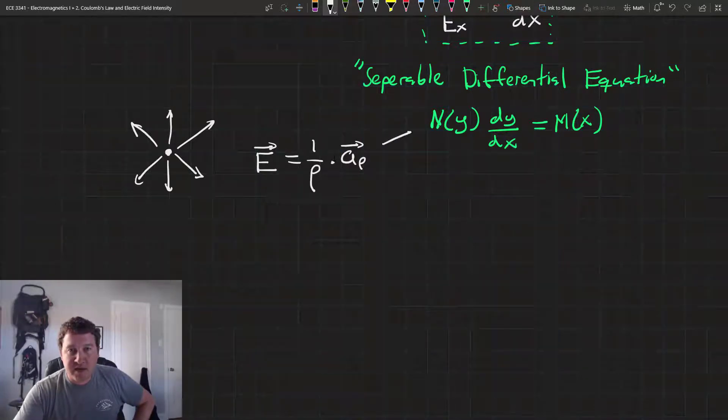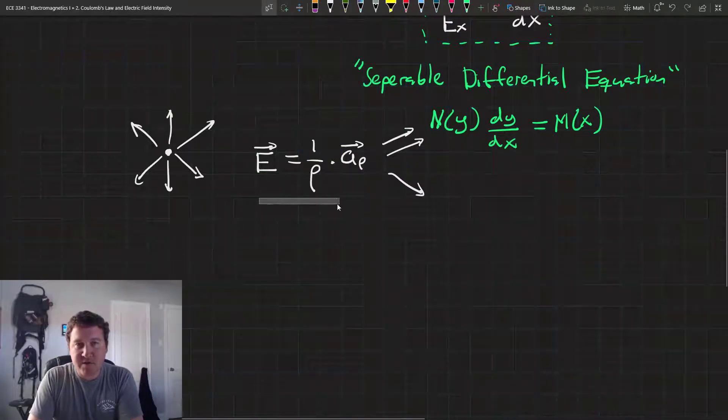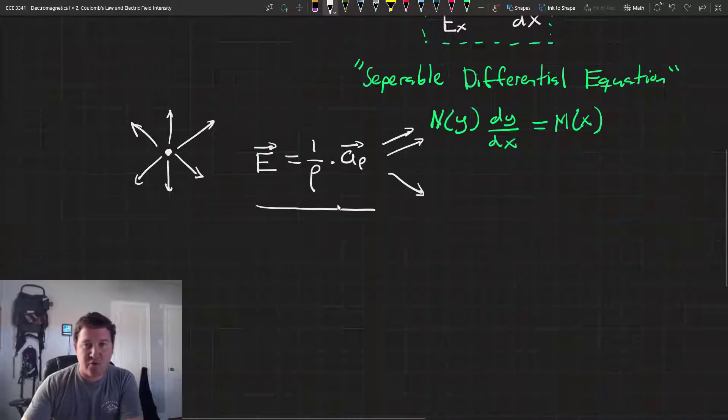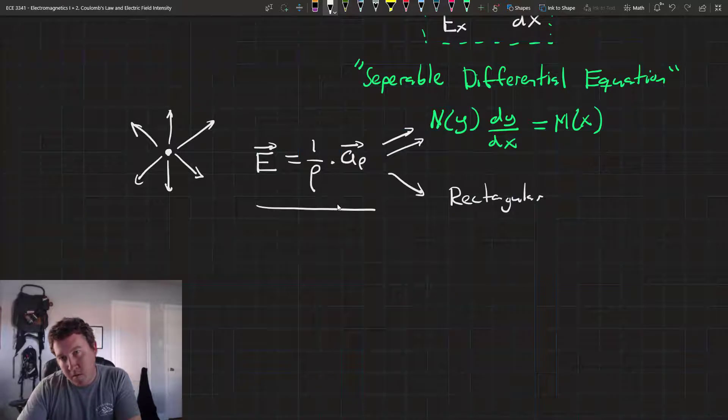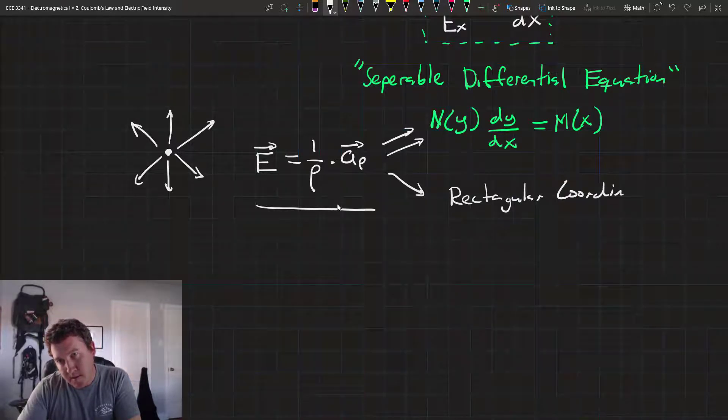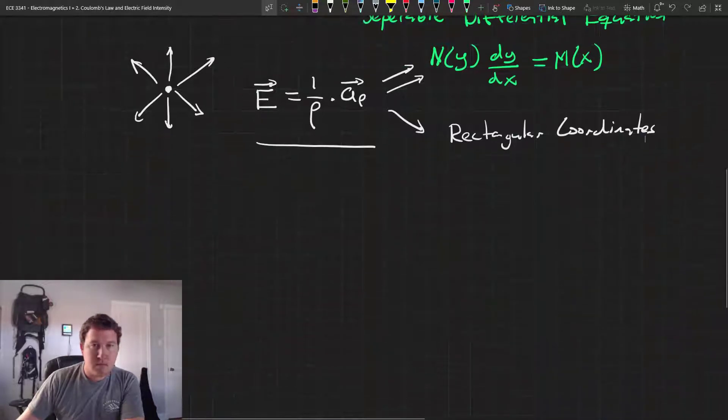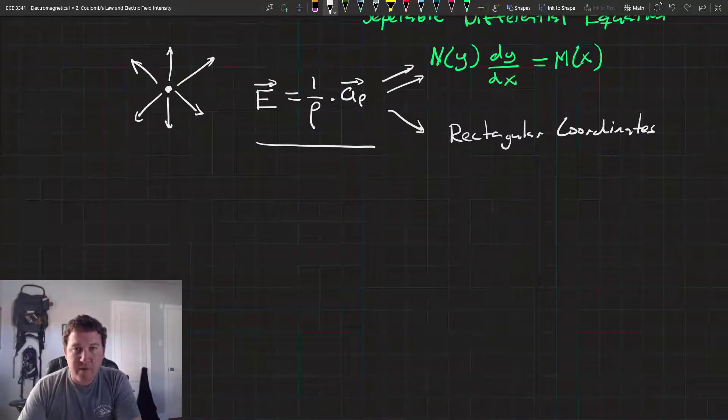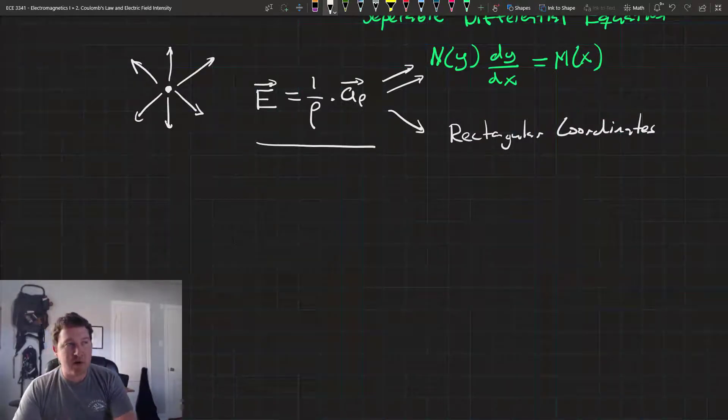The first thing we need to do in order to get it into this equational form, we need to convert this electric field in cylindrical coordinates into its equivalent representation in rectangular coordinates. Remember we talked before about conversions between cylindrical coordinates and rectangular coordinates. If you're not familiar with that, go back and watch that video.